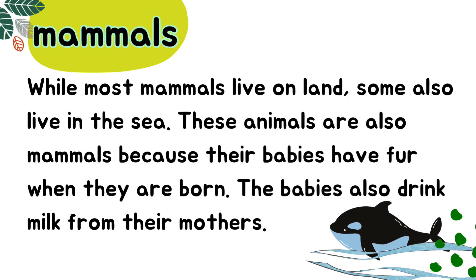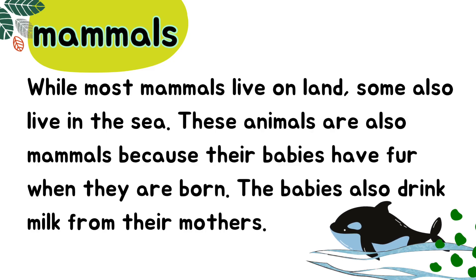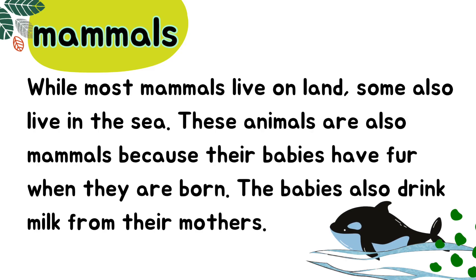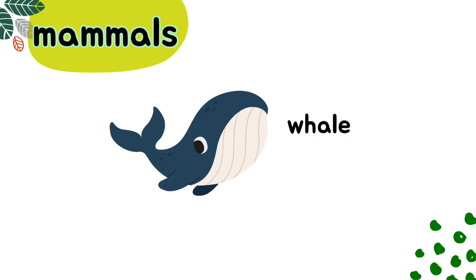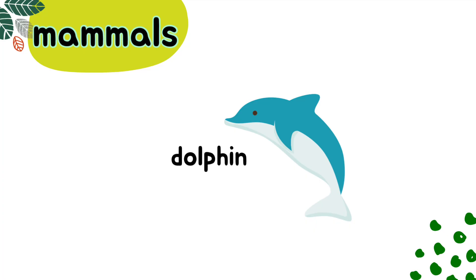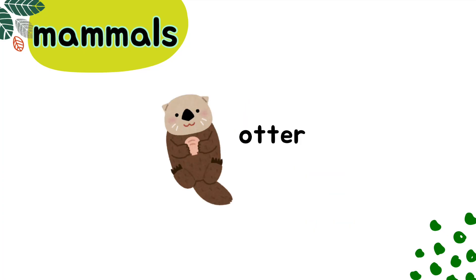These animals are also mammals because their babies have fur when they are born. The babies also drink milk from their mothers. Some examples of mammals that live in the sea are: whale, dolphin, and otter.